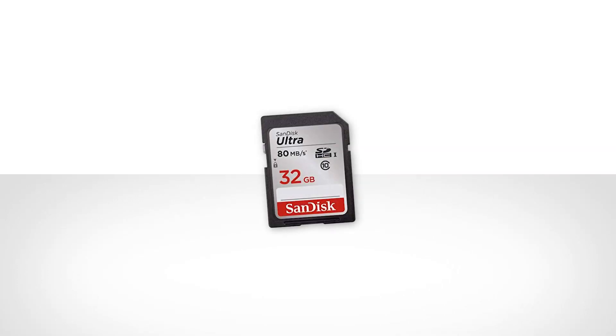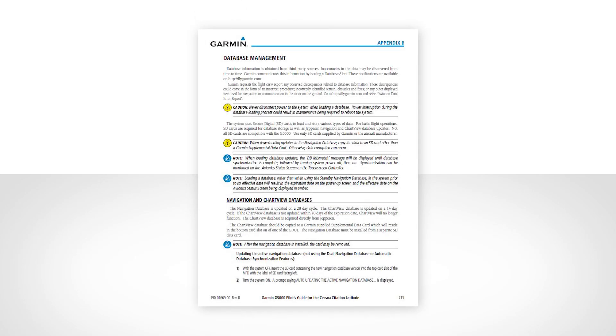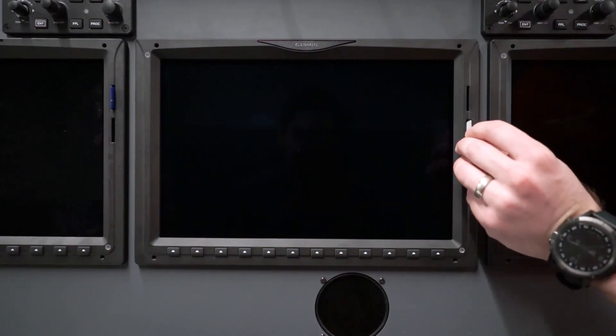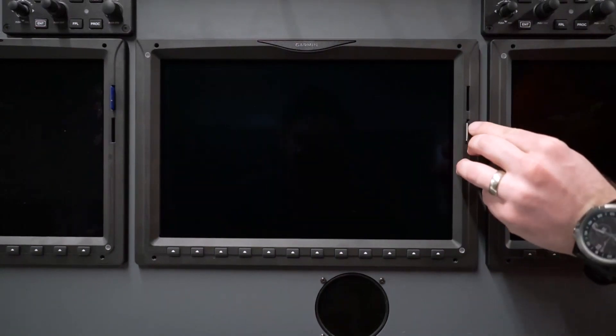To demonstrate the database update process using an SD card, we'll use the steps in Appendix B of the Pilot's Guide. The first step is to ensure that the system is not powered on. Then we place the SD card containing the new databases into the bottom SD card slot of the MFD.